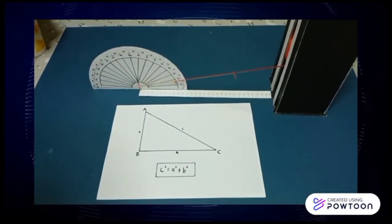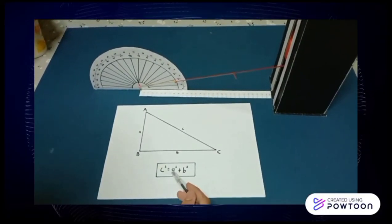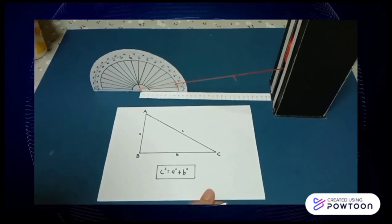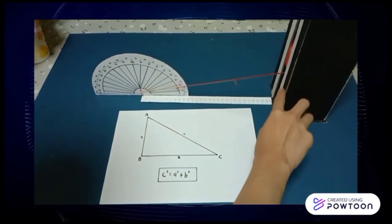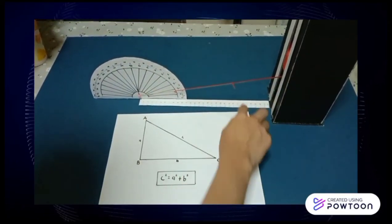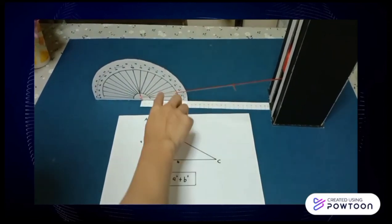By using Pythagoras theorem, C squared equals A squared plus B squared, where we have A as the height and B as the base. We can calculate the hypotenuse.